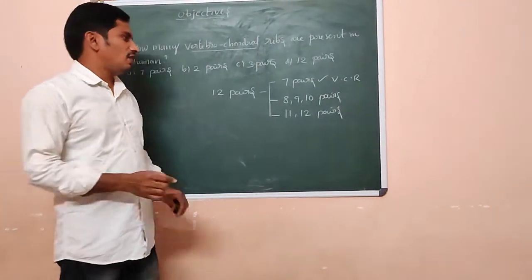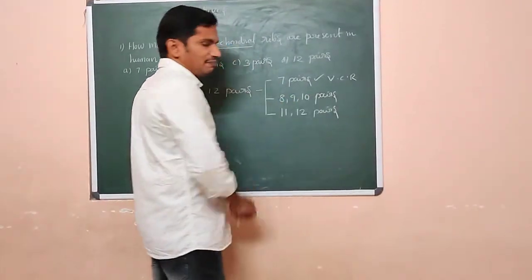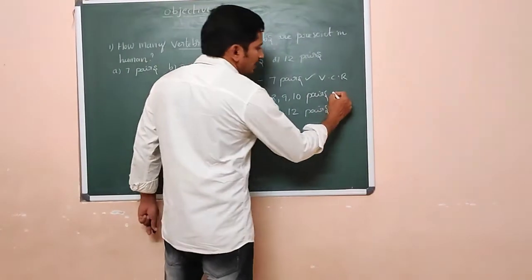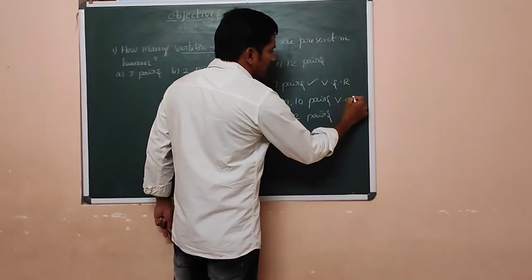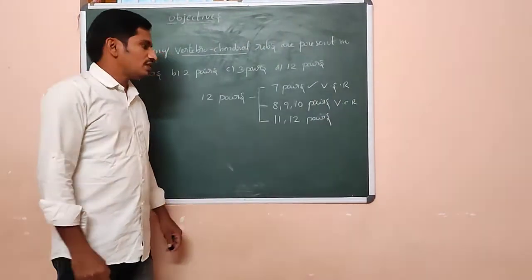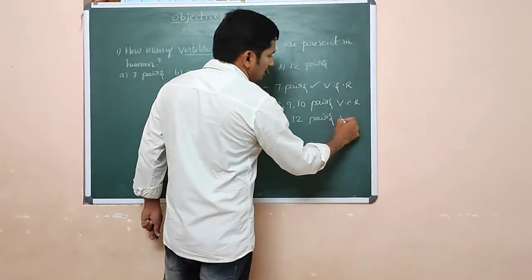Whereas the 8th, 9th, and 10th - how many pairs? 1, 2, 3 - three pairs, which are known as the vertebrochondral ribs. These are the false ribs, we call them the vertebrochondral ribs.